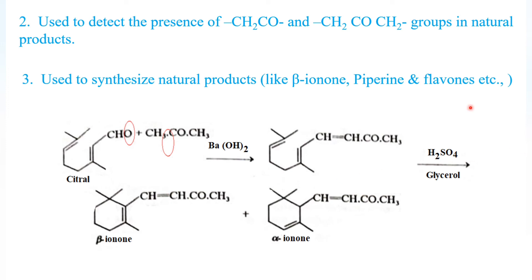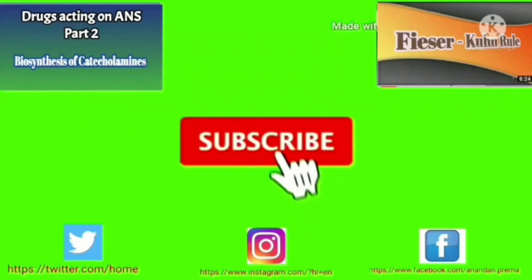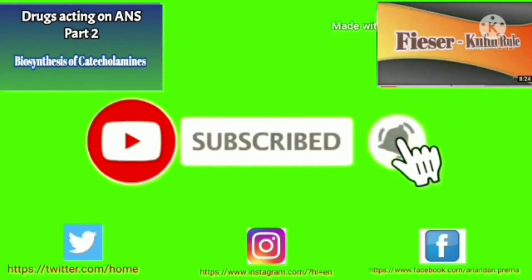In summary, the Claisen-Schmidt reaction: an aromatic aldehyde not having any alpha hydrogen reacts with aliphatic aldehydes, ketones, or esters having active hydrogen, in the presence of 10% alkali, and undergoes condensation to form alpha-beta unsaturated carbonyl compounds. That is all about the Claisen reaction. Thank you.